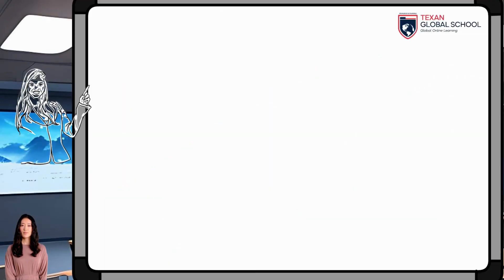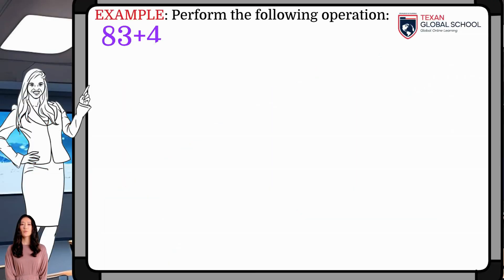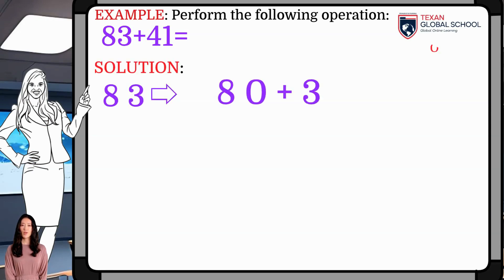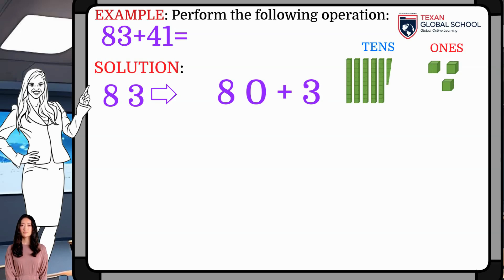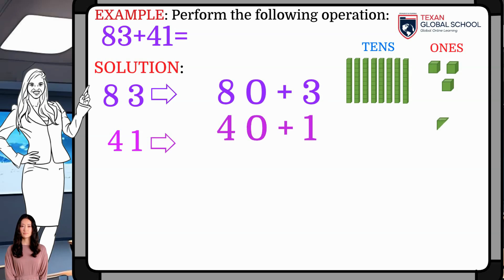In this next example, we will perform the addition of 83 plus 41. First, decompose each addend into 1s and 10s. 83 has 3 1s and 8 10s. 41 has a 1 and 4 10s. We will place the bars in each case to see the model.